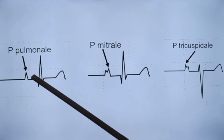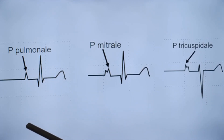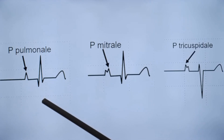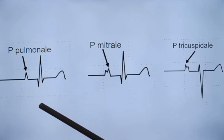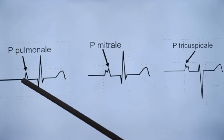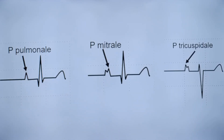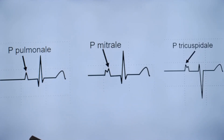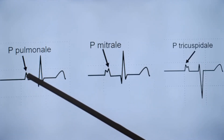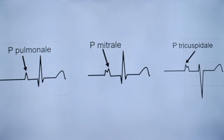P pulmonale shows sharp P waves in inferior leads, usually leads II, III, and aVF. Corresponding to this, there will be a sharp initial deflection in V1 as well. The defined criterion is that the height of the P wave should be more than 2.5 mm on a standard ECG.